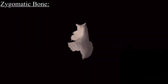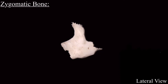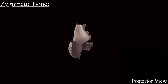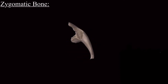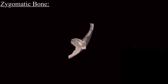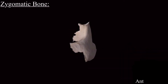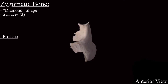The individual zygomatic bone can be viewed from the anterior, lateral, posterior, medial, inferior, and superior views. The individual zygomatic bone is diamond-shaped, having three surfaces, three processes, and five borders.